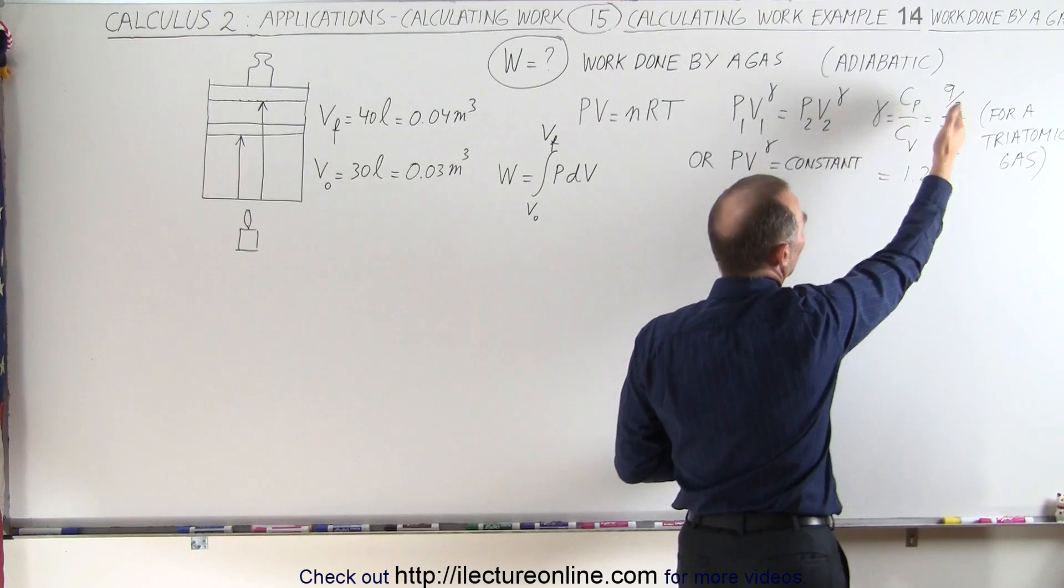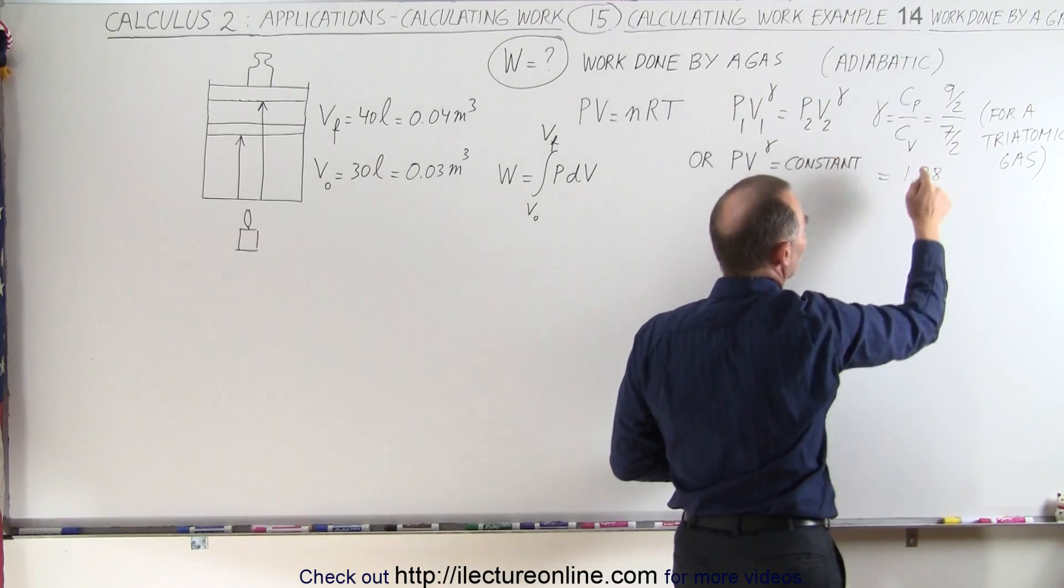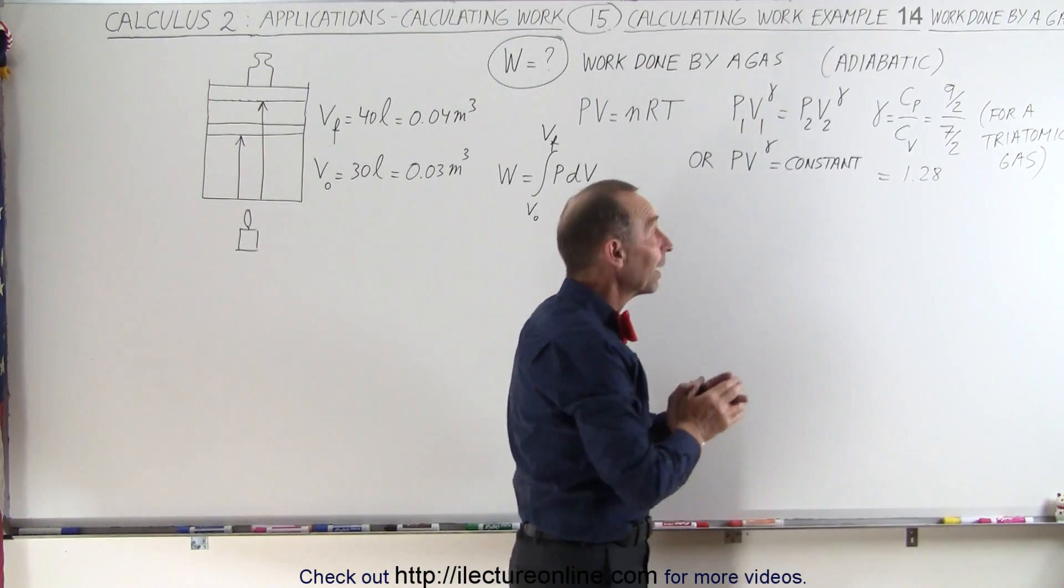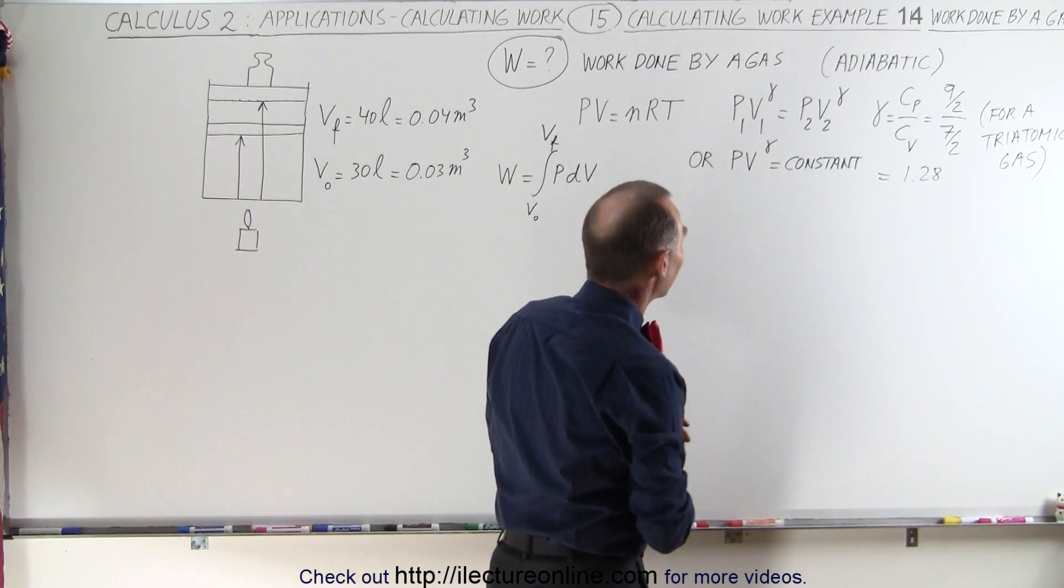For a triatomic gas, that would be a ratio of 9 over 2 divided by 7 over 2, or 1.28. If you need to know more about that, we have some videos in physics that explain all that.